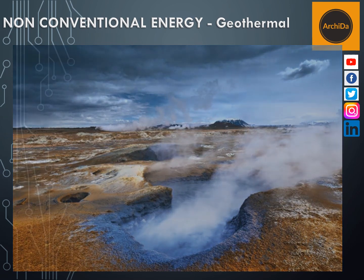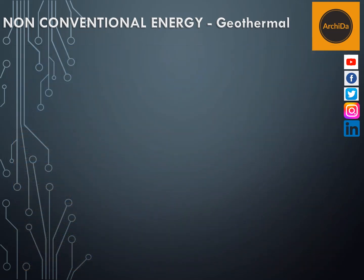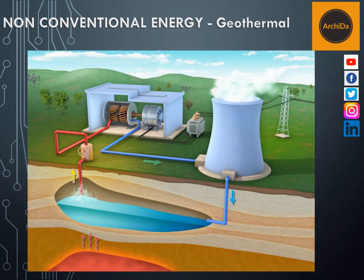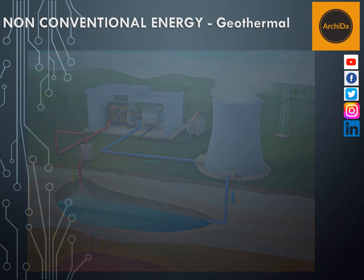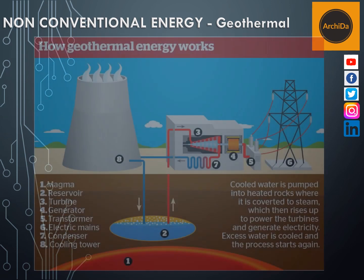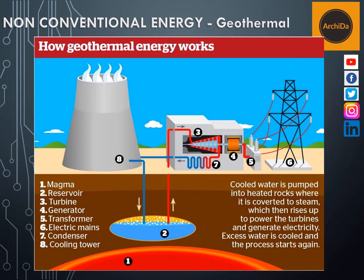Calculations show that the Earth, originating from a completely molten state, would have cooled and become completely solid many thousands of years ago without an energy input in addition to that of the Sun. It is believed that the ultimate source of geothermal energy is radioactive decay occurring deep within the Earth.